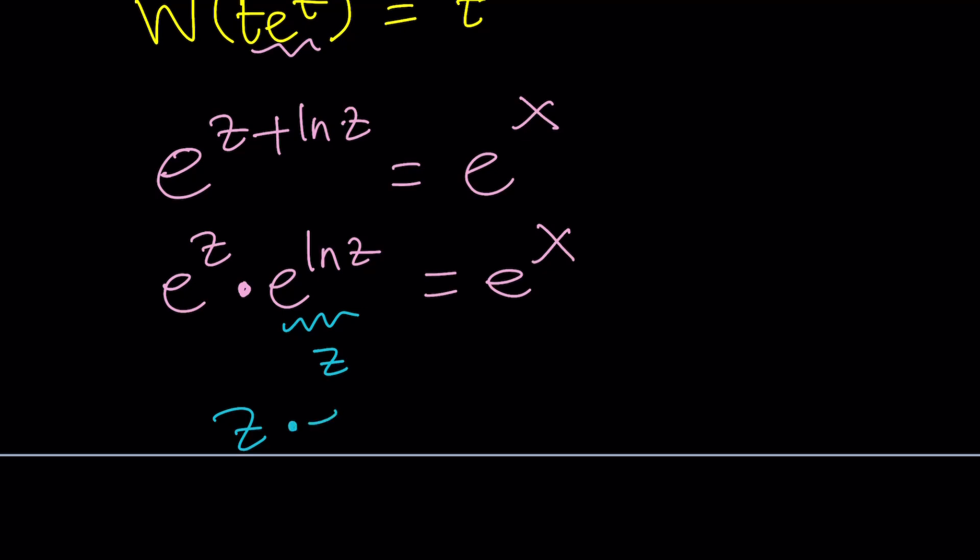which is kind of like what? t e to the t. Exactly. That's our thing, right? So we got that. Now you can go ahead and Lambert W both sides. All right? And that's going to give you what? The answer. Awesome.